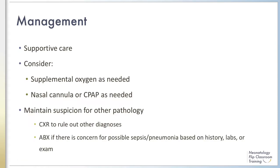Treatment for infants with TTN consists primarily of supportive care with or without oxygen as needed to maintain saturations greater than 94%. If respiratory distress is significant, the infant may require CPAP for further support. Because TTN is a diagnosis of exclusion, it is important to maintain suspicion for other pathology by checking on the infant frequently and watching to see if clinical symptoms evolve over time.